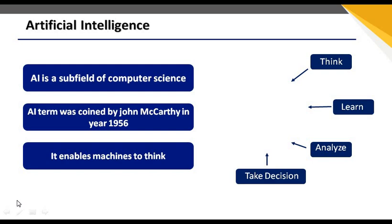Let's talk about AI. Basically, what is artificial intelligence? It is an approach where we train some particular models. Artificial intelligence is a sub-field of computer science. It was created by John McCarthy in 1956. Basically, what it does is it enables machines to think — we train a particular model or object to work according to our needs.